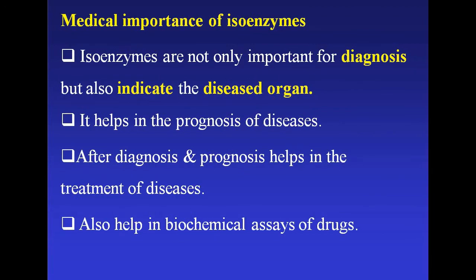What are the medical importance of isoenzymes? Isoenzymes are not only important for the diagnosis, but also indicate the diseased organ. They help in the prognosis of diseases. After diagnosis and prognosis, they help in the treatment of diseases and also help in the biochemical assays of drugs.